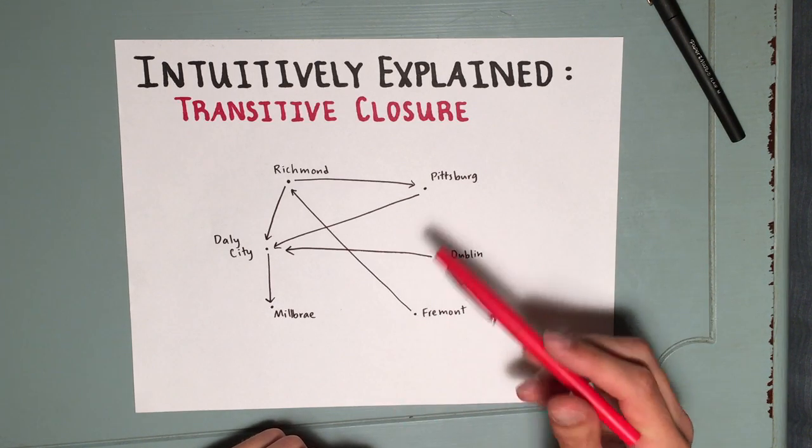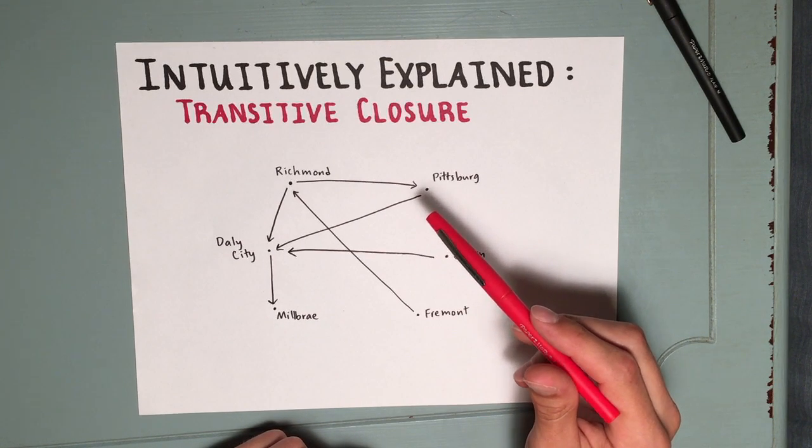The transitive closure will include everything we have here, but also paths you can get eventually.